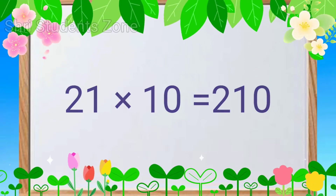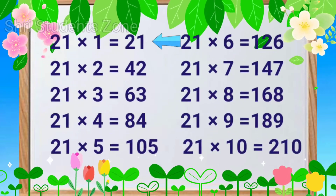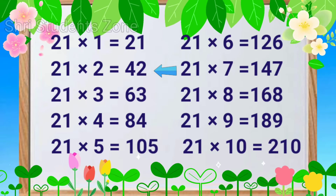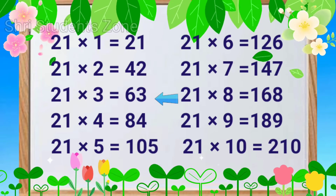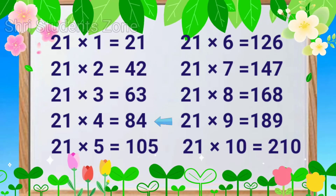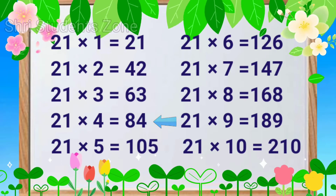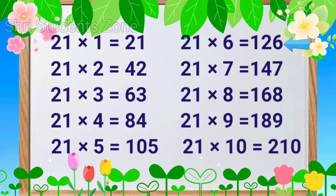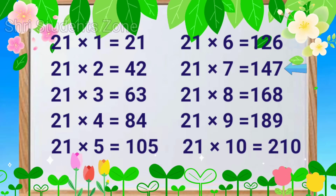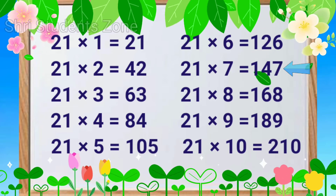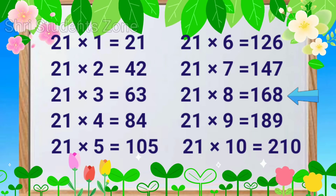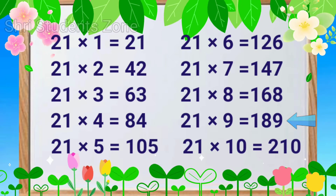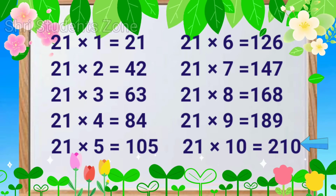Let's read again. 21 ones are 21, 21 twos are 42, 21 threes are 63, 21 fours are 84, 21 fives are 105, 21 sixes are 126, 21 sevens are 147, 21 eights are 168, 21 nines are 189, 21 tens are 210.